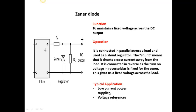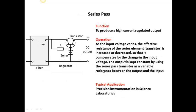The zener is only for low current power supplies and is used as a voltage reference. The series pass is for higher current. It incorporates a zener and a resistor — a small current on the base of the transistor turns on a large current. This transistor changes its resistance dependent on the load, which keeps the voltage constant. It's used for very high precision instrumentation in science labs.